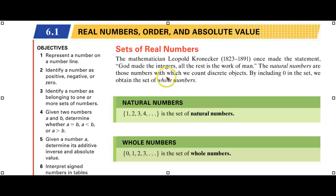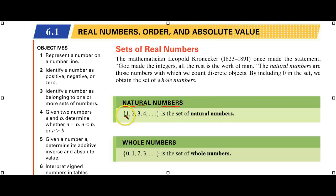The natural numbers are those numbers with which we count discrete objects, and that introduces our first set of numbers in the category of Real Numbers. A synonym for this are the counting numbers, and they would be 1, 2, 3, 4, and then the ellipsis, indicating this pattern continues. This is what we call roster notation.